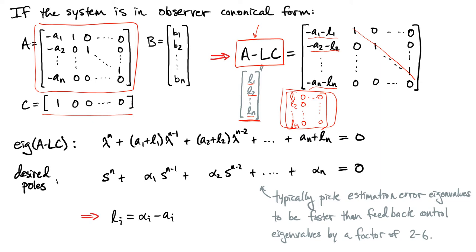Without going through the full derivation — though it is useful to double-check on small examples — we can directly go from this expression to the eigenvalues, where the negative of each of these terms appears as a coefficient in the characteristic polynomial expansion. It then becomes a matter of comparing that to the characteristic equation of the desired poles and equating what values of L1 through Ln achieve the coefficients you want. The overall framework is the same, just shifted mainly by transposes and the exchange of B and C vectors.